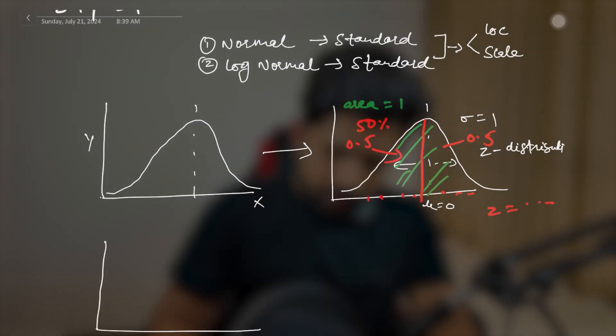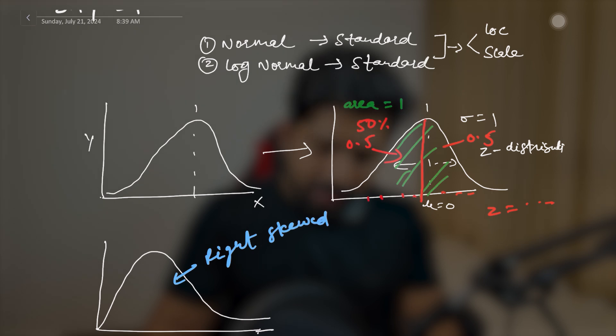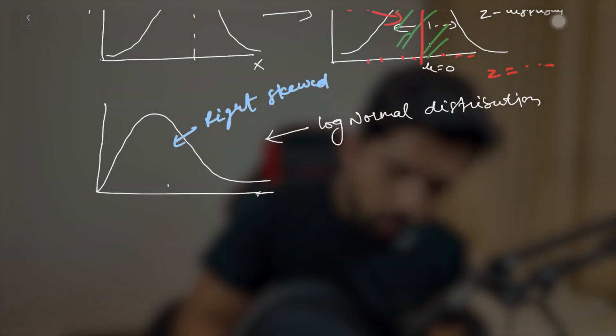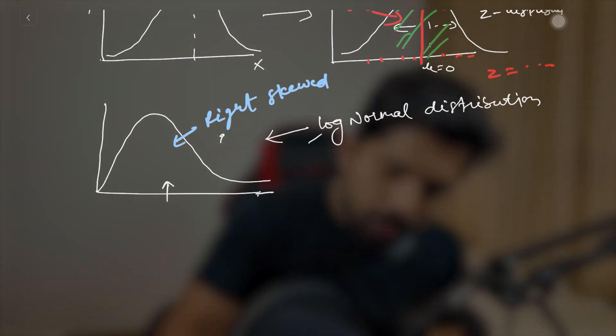In real life we do not always find normally distributed data. Sometimes we have skews — sometimes a left skew, sometimes a right skew. If you get a distribution shaped like this, you can say that it is right skewed. When we have data similar to this shape, we call this a log normal distribution. It is as simple as that.